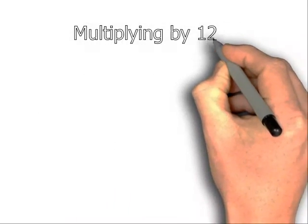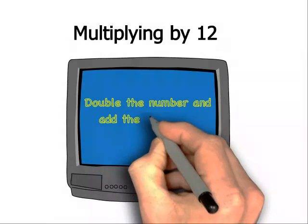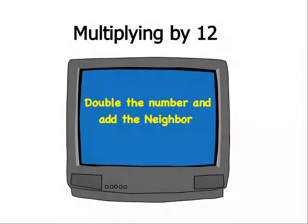Today we're going to multiply by 12. The rule for multiplying by 12 is double the number and add its neighbor. So we'll have a look at an example.